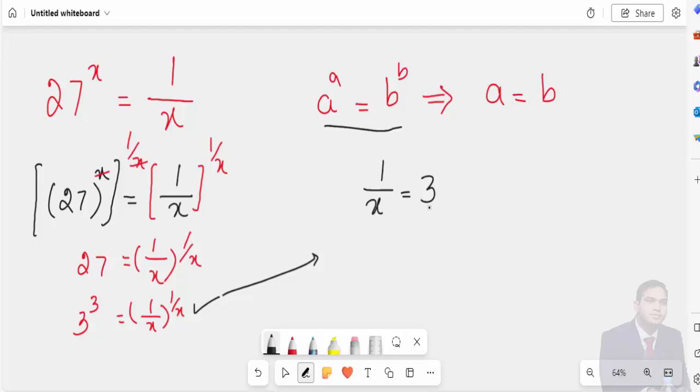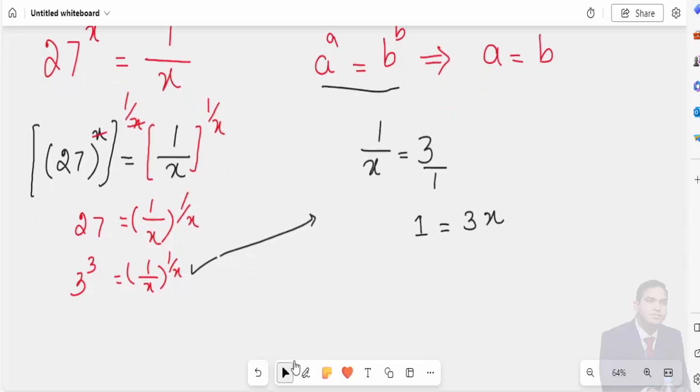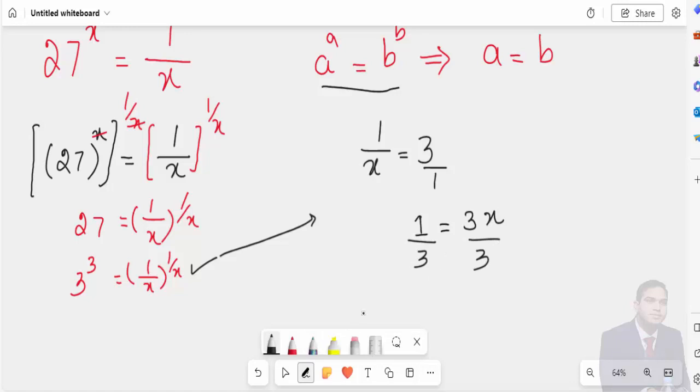Just cross multiplying. This is 1. Cross multiplying, 1 is equal to 3x. Dividing both sides by 3, you will get the answer of x. This is the answer of x is equal to 1 over 3.